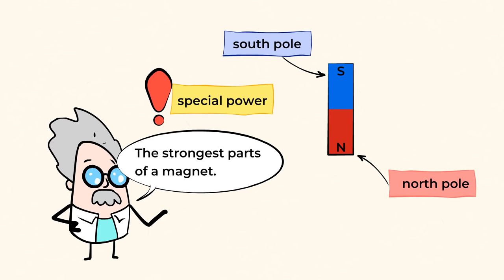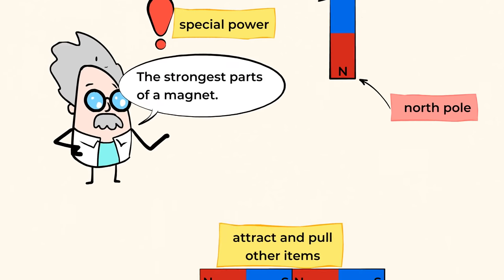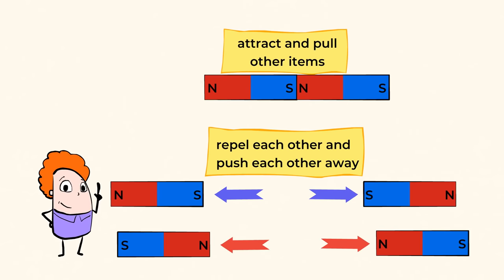The magnetic field is what makes magnets strong. All magnets have a north and a south pole. Same poles repel each other, and opposite poles attract each other.